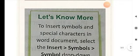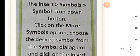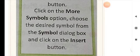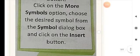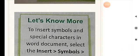Another useful piece of information: how to insert symbols and special characters in Word documents. Select Insert, then Symbol, and the Symbol drop-down will appear. Click on 'More Symbols'. Choose the desired symbol from the Symbol dialog box, then click the Insert button. Many symbols cannot be found on the keyboard, so you can find and insert them through Insert Symbols.